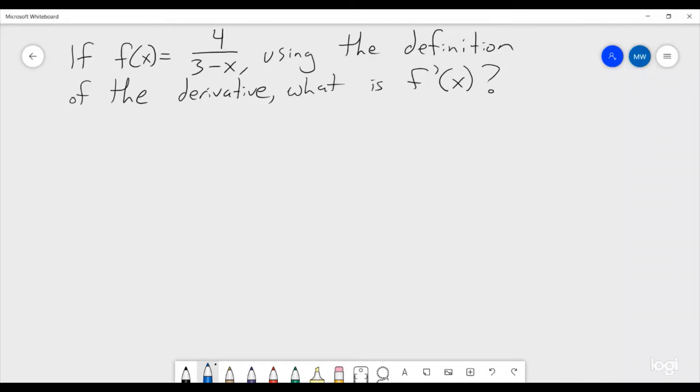So if we are given the function f of x is 4 divided by 3 minus x, and we are asked to use the definition of the derivative to find f prime of x, how would we do this?